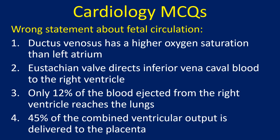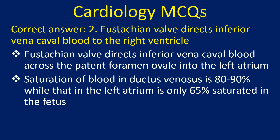Wrong statement about fetal circulation: 1. Ductus venosus has a higher oxygen saturation than left atrium, 2. Eustachian valve directs inferior vena cava blood to the right ventricle, 3. Only 12% of the blood ejected from the right ventricle reaches the lungs, 4. 45% of the combined ventricular output is delivered to the placenta. Correct answer: 2. Eustachian valve directs inferior vena cava blood to the right ventricle. The Eustachian valve actually directs inferior vena cava blood across the patent foramen ovale into the left atrium.